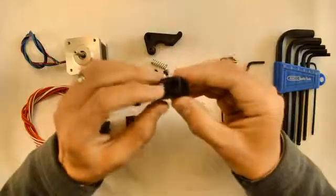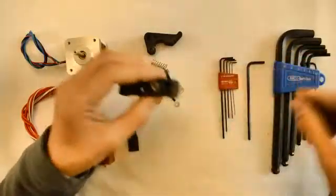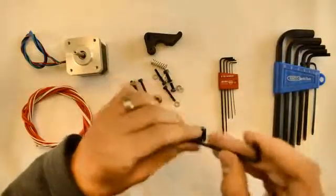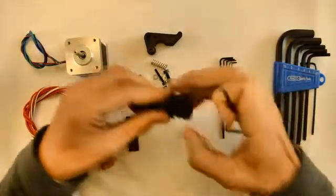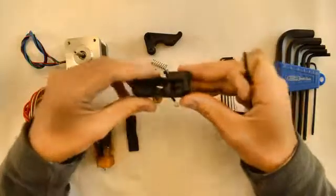So you will assemble it with the grub screw to the bottom. You can use the Allen key to force it down to the bottom so that it looks like that.